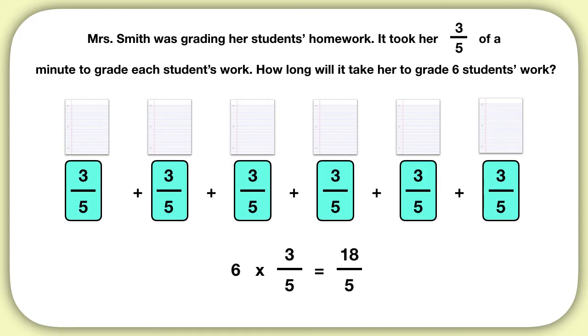The answer is 18 fifths. But then we should convert this to a mixed number. What is 18 fifths as a mixed number? You could write it as 3 wholes and 3 fifths, so it will take Mrs. Smith 3 and 3 fifths minutes to grade her students' work.